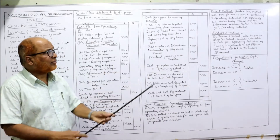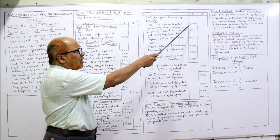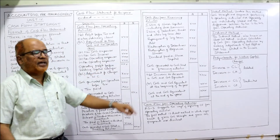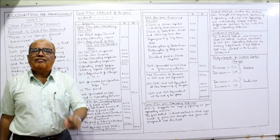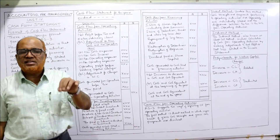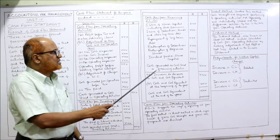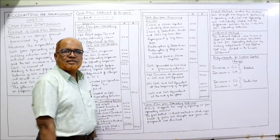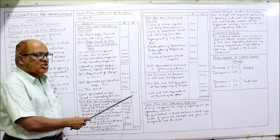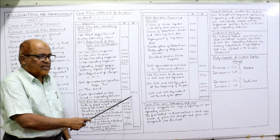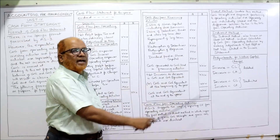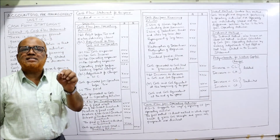Bracket denotes minus. After setting off all inflows and outflows in financing activity, the final amount is taken in the outer column. If positive, it is cash generated from financing activity; if negative, it is cash used in financing activity. So we now have three items in the outer column: cash generated from operating activity, cash generated from investing activity, and cash generated from financing activity.